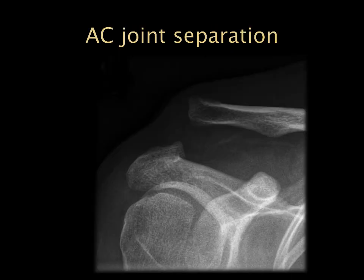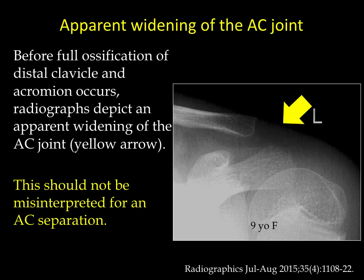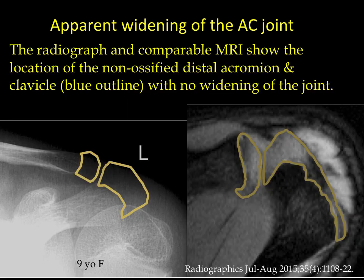Moving on to acromioclavicular joint separation — this is also a common injury in adults. We can see elevation of the distal clavicle relative to the acromion. However, in pediatrics, you might have apparent widening of the AC joint because bones haven't fully ossified. We don't want to mistake that for AC separation. We have ossification centers of the distal clavicle and distal acromion visible on MRI, which take up space on the x-ray that we might otherwise mistake for widening of the joint.